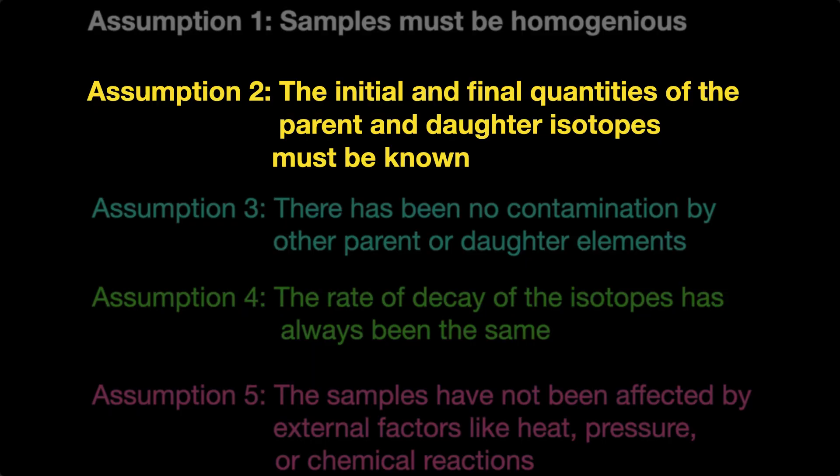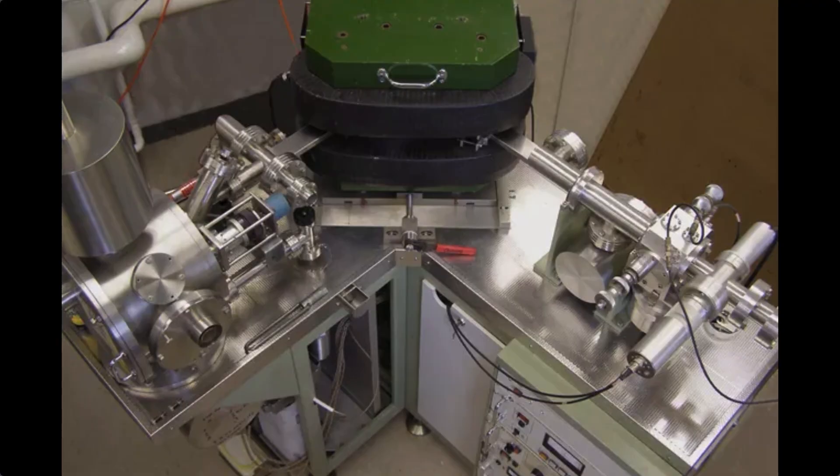Assumption two: the initial and final quantities of the parent and daughter isotopes must be known. The final quantities of those isotopes can be measured with great accuracy. The initial quantities can never be measured at all — they must be estimated, or should we say guesstimated. Believers in radiometric dating have convinced themselves they can make good guesses, but they can never be checked because they can never be measured.